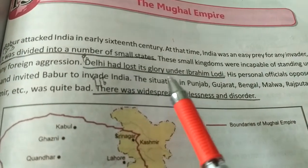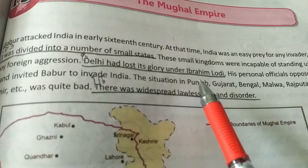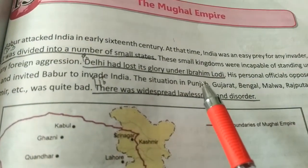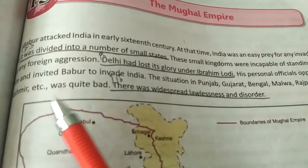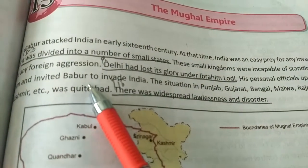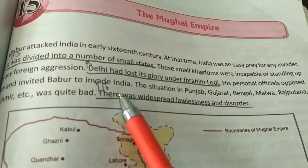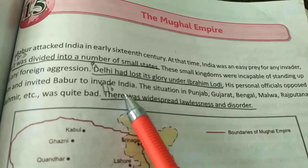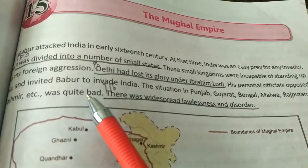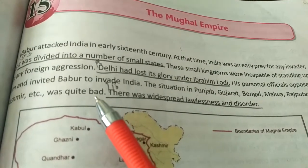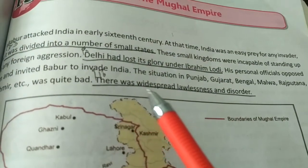Delhi had lost its glory under Ibrahim Lodi, who was unable to hold the whole empire together for long. His personal officials opposed him and even invited Babur to invade India, as they were not in favor of Ibrahim Lodi and wanted someone else to control the empire.